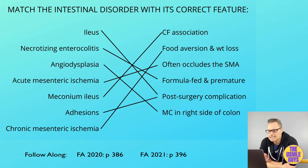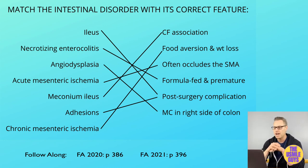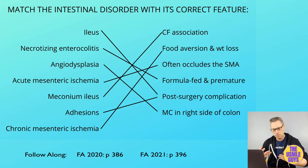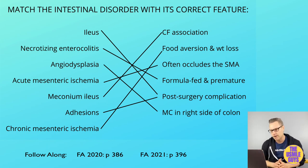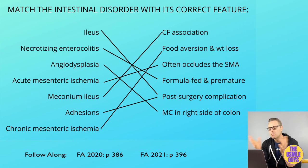Here are the correct answers. Let's look at important intestinal disorders before moving on to polyps in the next lecture. Acute mesenteric ischemia occurs when a blockage stops blood flow to the GI tract, resulting in severe abdominal pain that is out of proportion to the physical findings. The most commonly affected vessel is the SMA — the superior mesenteric artery.